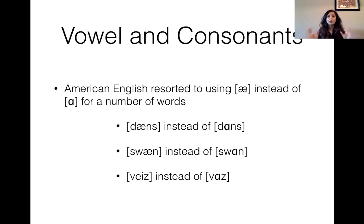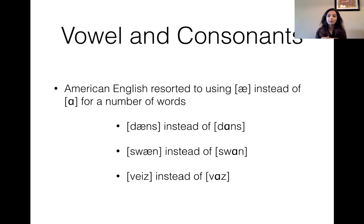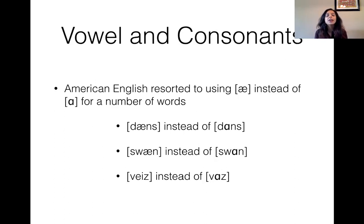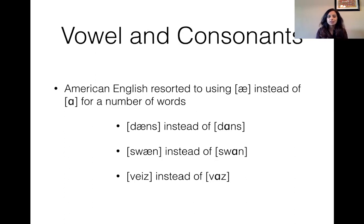American English features the broad 'a' more prominently — saying 'dance' instead of 'dahce,' 'swan' instead of 'swahn,' or 'wass' instead of 'wahs.' On a personal note, when I first came to America about 10 years ago, I would say things with a British accent — 'dahce,' 'swahn,' 'wahs' — and it was really odd teaching students at USC because they didn't understand what I was saying. Now 10 years later, I use the American English pronunciations because I've adapted to speaking that way.